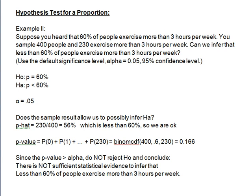Hi class, Professor Dave here and we're doing a second example for a hypothesis test for proportion. Suppose you heard that 60% of people exercise 3 hours or more. You sampled 400 people and 230 exercise more than 3 hours per week. Can we infer that less than 60% of people exercise more than 3 hours per week? We'll use the default significance level: alpha is equal to 0.05, or 95% confidence level.